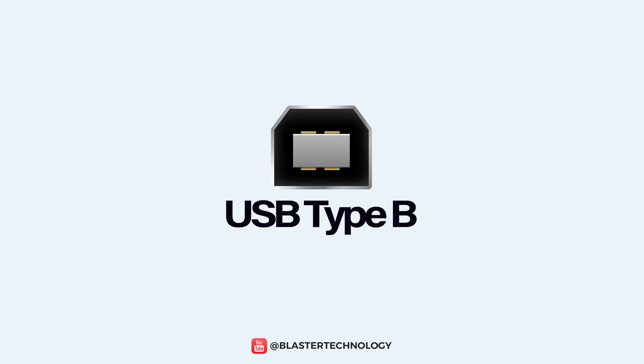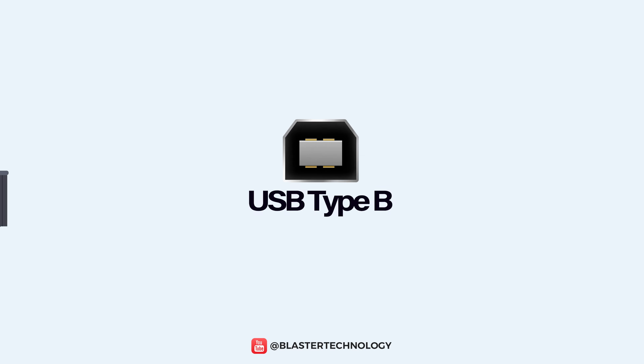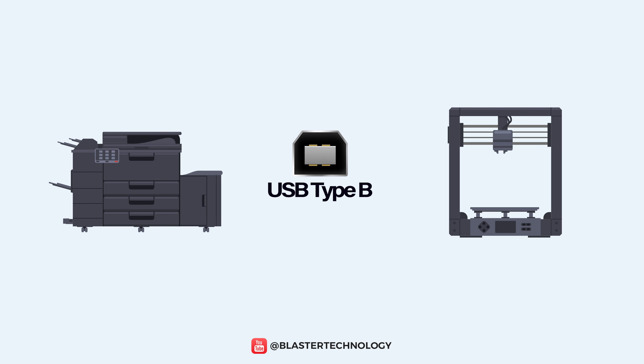The USB-B port type is an old one and is not used much nowadays. It has a square shape at one end and is usually connected to a printer or similar device.